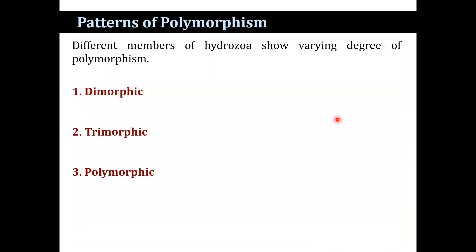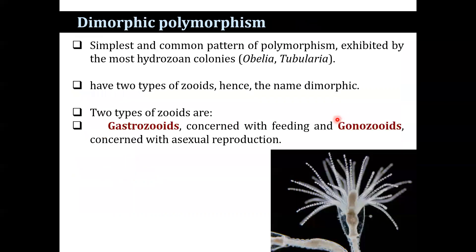If we see what patterns of polymorphism are found among different members of Hydrozoa, there are varying degrees: it may be dimorphic, trimorphic, or polymorphic. Dimorphic is a very simple and common pattern of polymorphism exhibited by most hydrozoan colonies, such as Obelia and Tubularia. They have two types of zooids — the unit of the colony is known as a zooid — so having two types of zooids, they are known as dimorphic.